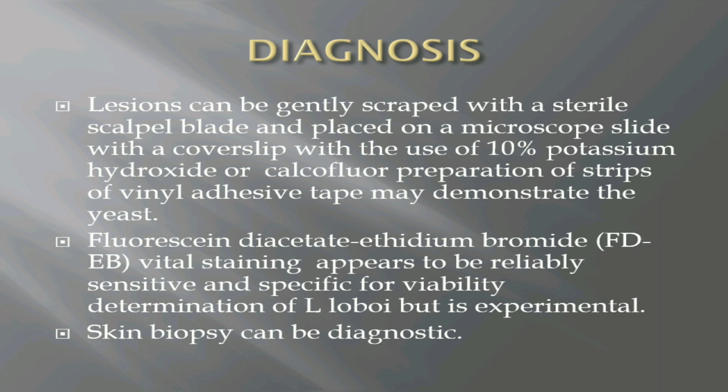What is the laboratory diagnosis of this condition? The lesions can be gently scraped with a sterile scalpel blade and placed on a microscope slide with a coverslip, using 10% KOH or calcofluor preparation or strips of vinyl adhesive tape — this may demonstrate the yeast. Fluorescein diacetate ethidium bromide (FDAB) vital staining appears to be reliably sensitive and specific for viability determination of Lacasia loboi; however, this is in the experimental stages.